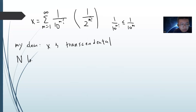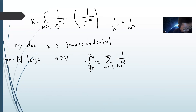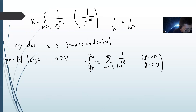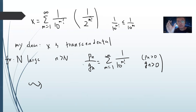Let's fix a large capital N, and let small n > N. Write P_n/Q_n as the partial sum of the first n terms. Obviously P_n > 0 and Q_n > 0. We know P_n/Q_n = ∑_{k=1}^{n} 1/10^(k!). By collecting all denominators, Q_n must be less than or equal to 10^(n!).